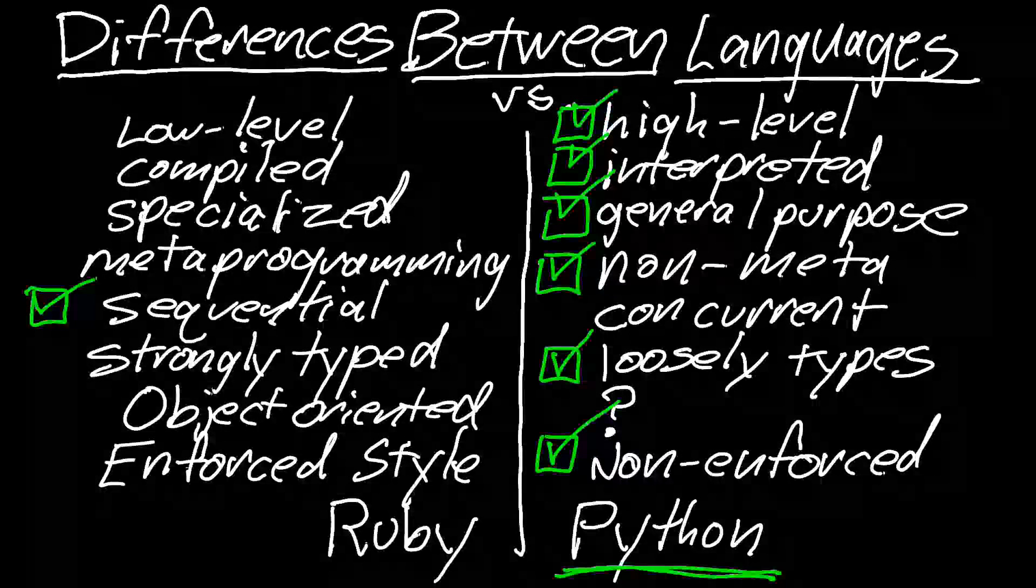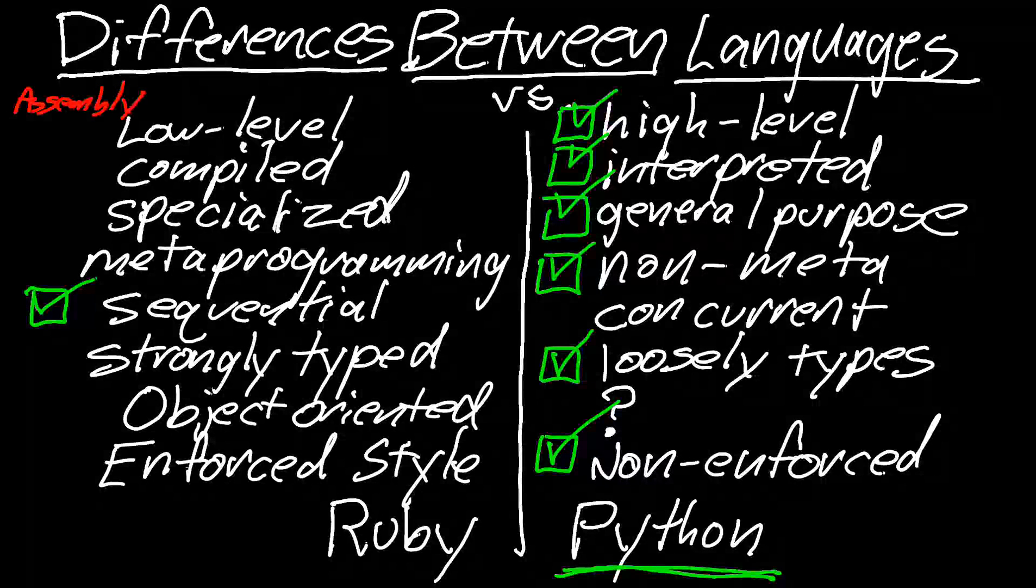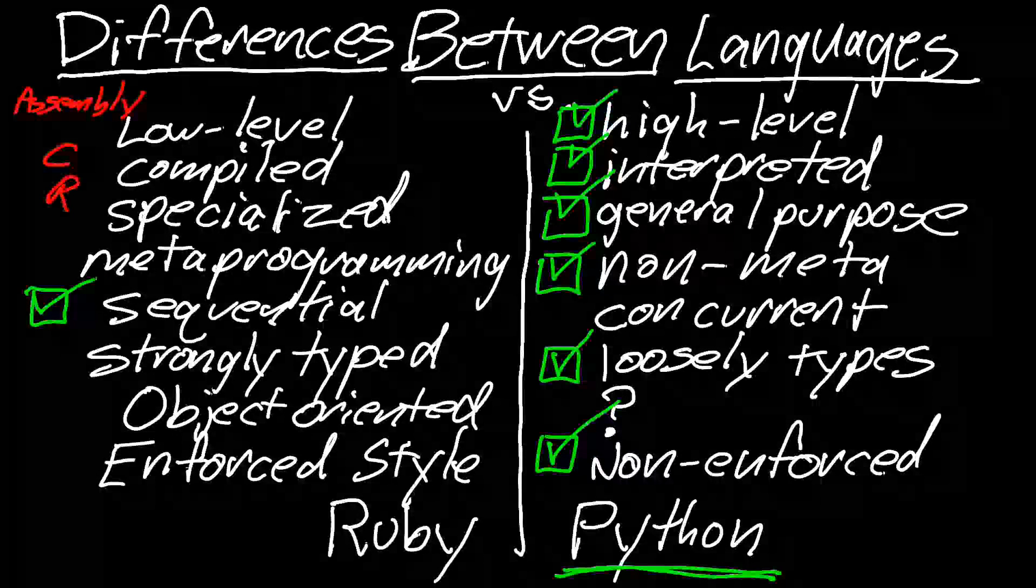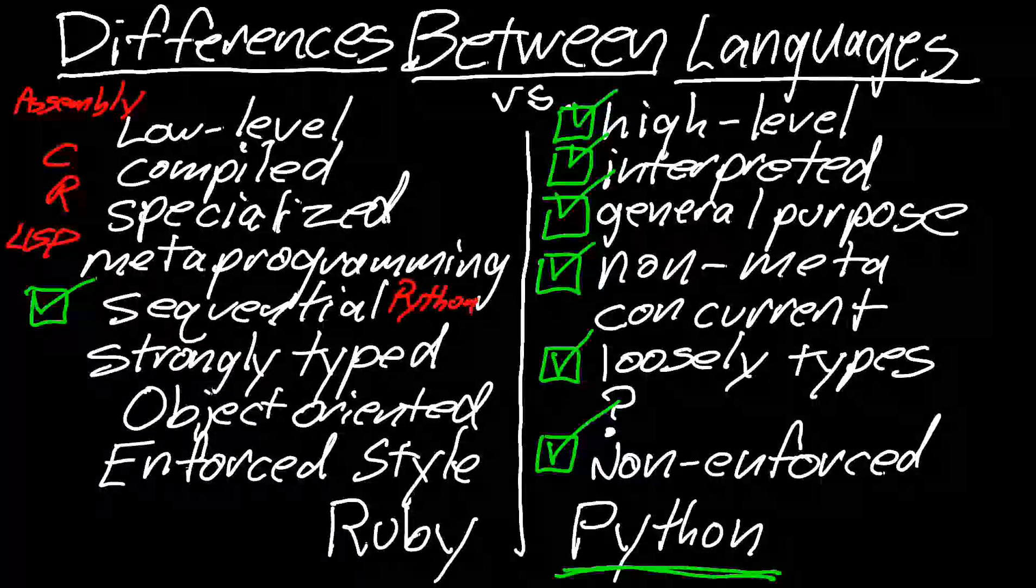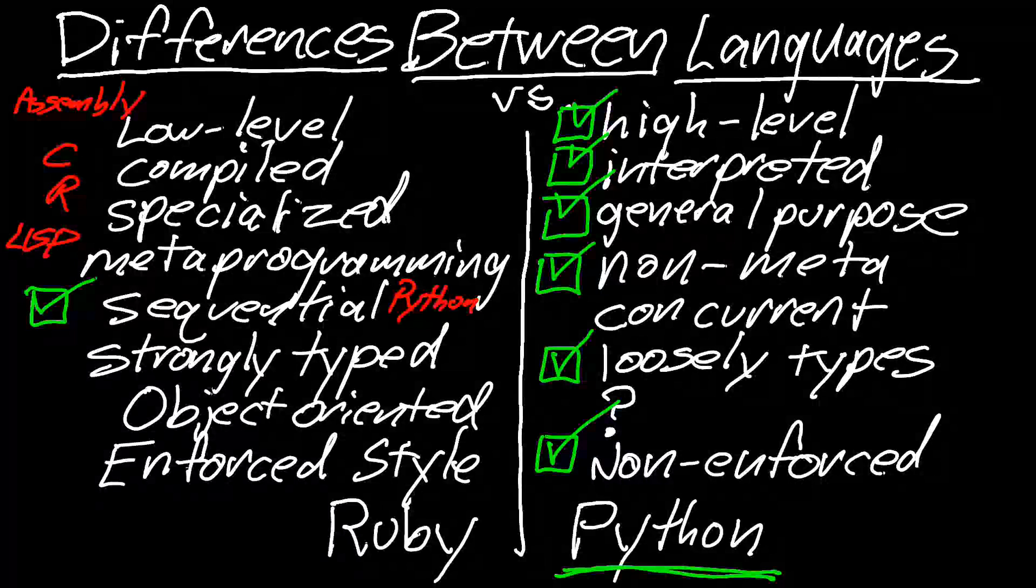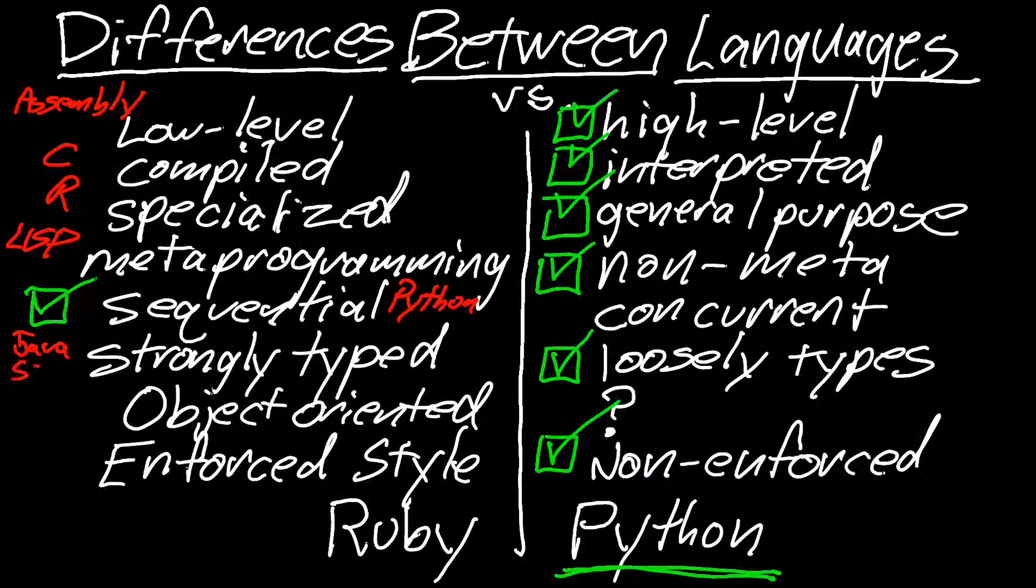Low level would be assembly. Compiled would definitely be C. Specialized would be R. Metaprogramming would be Lisp. Sequential is Python, unfortunately for now. Strongly typed would be Java. Even more strongly than Java would be Scala.